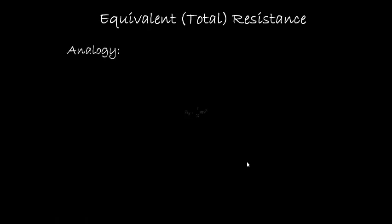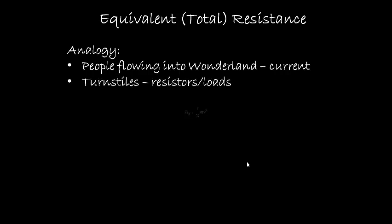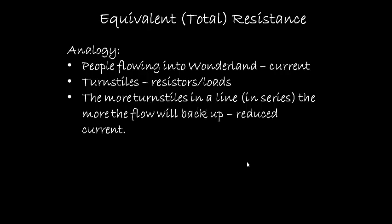An analogy we like to use is think of people all lined up trying to flow into Wonderland. We're going to say that the people flowing is the current. The turnstiles that they have to go through will be our resistors or our loads. So if we put a lot of turnstiles in a line so that the people have to go through one and then the second one and then the third one, the more the people flow will back up or the current is going to be reduced.